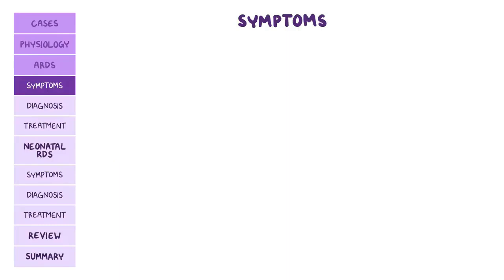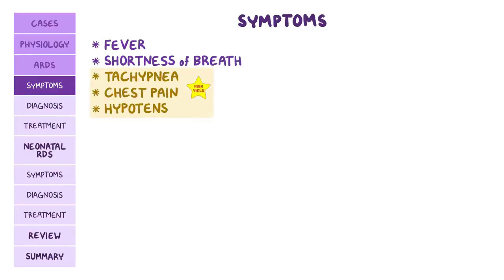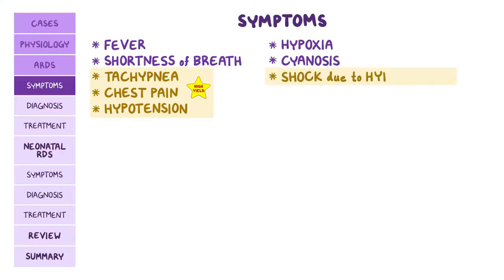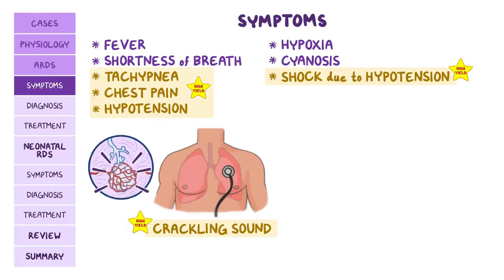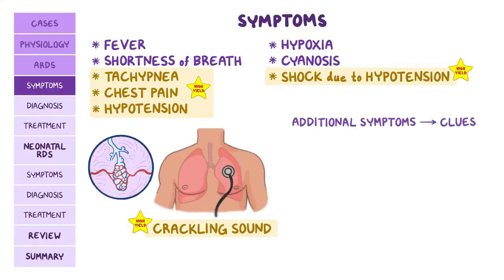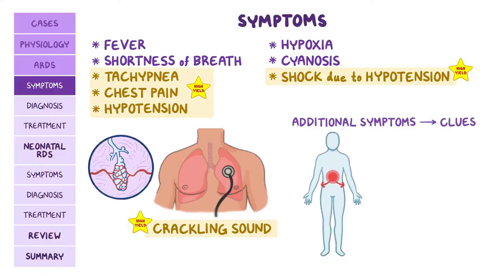The inflammation process and impaired gas exchange lead to fever, shortness of breath, tachypnea, chest pain, hypotension, hypoxia, and cyanosis. More often than not, ARDS will lead to shock due to hypotension. The excess fluid in the lungs can cause a crackling sound called rales during auscultation. Additional symptoms might provide clues to the underlying cause — for example, epigastric pain radiating to the back with a history of gallstones indicates acute pancreatitis.